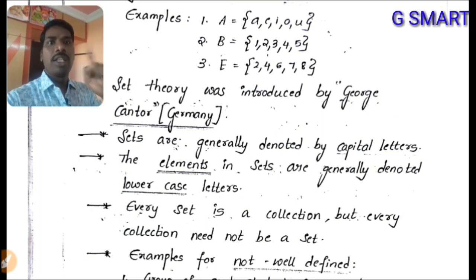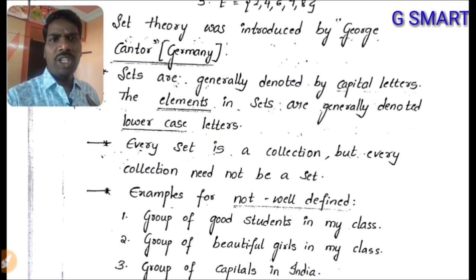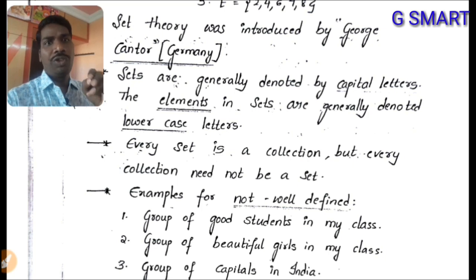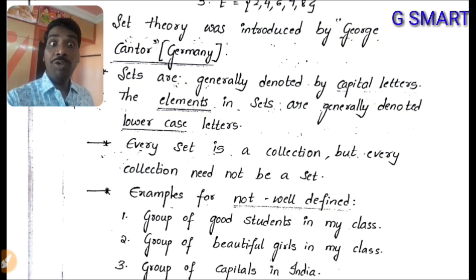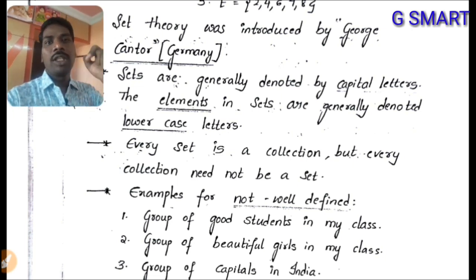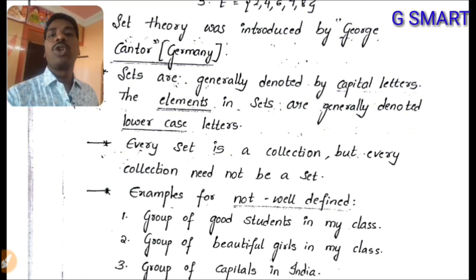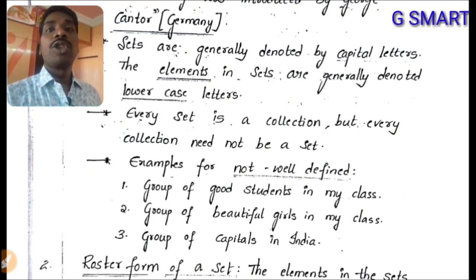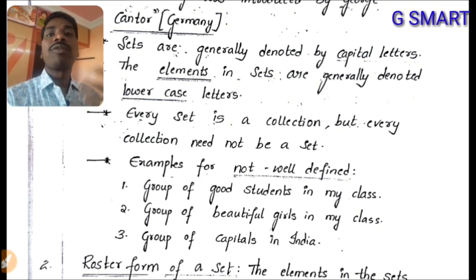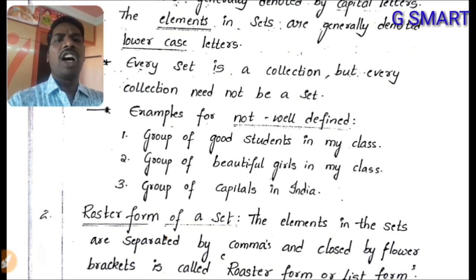Examples of non-well-defined collections: a group of good students in a class — because what is 'good' can change. A group of beautiful girls in a class — because beauty can change. A group of capitals in India — because capitals may change. So these are not sets.